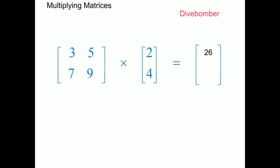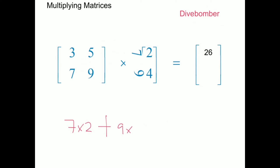Now let's look at the second part of this multiplication. I need to dive bomb row 2 and column 1, so the 7 and the 9 come out, they spin around and dive bomb the second matrix. I get 7 times 2 plus 9 times 4 — the 7 and 2 are multiplied, the 9 and 4 are multiplied, and they're added together: that's 14 plus 36, which equals 50. This 50 becomes row 2 column 1 of the answer matrix.